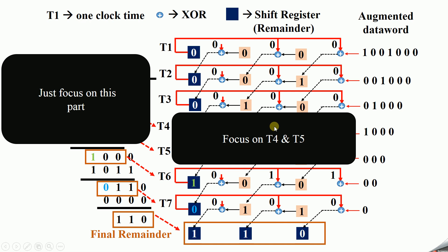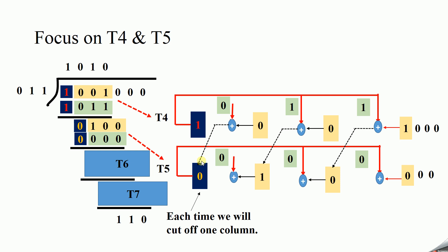Now there is a key point. Just focus on T4 and T5. You will find this bit is mapping this, this bit is mapping this, this bit is mapping this, and this bit is mapping this — each bit position in the process maps to a corresponding position in the circuit.